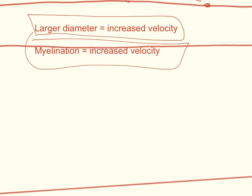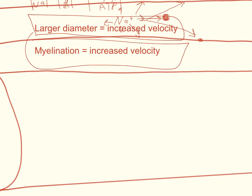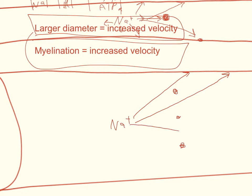Now let's look at the much wider axon. If we have a sodium ion here, at the same density of obstacles, there are a greater number of possible ways for the sodium to move forward because of the greater diameter. The greater diameter increases the probability that the sodium can move a farther distance without being blocked.